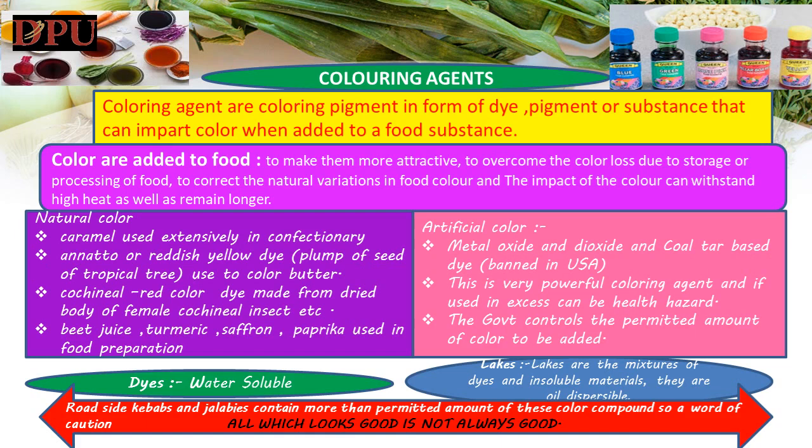Coloring agents: a coloring agent is a coloring pigment in the form of a dye, pigment or substance that can impart color when added to a food substance. Colors are added to food to make them more attractive, since color determines to a great extent the appearance of the food. Color is at times added to offset color loss due to storage or processing of food and to correct natural variations in food color.